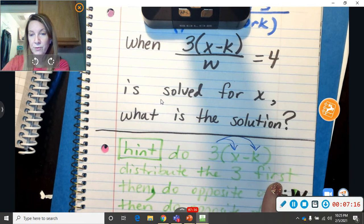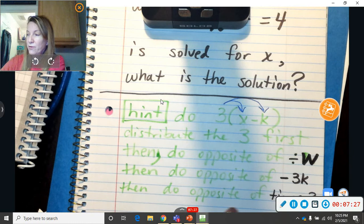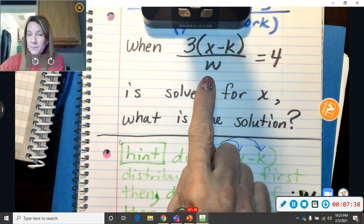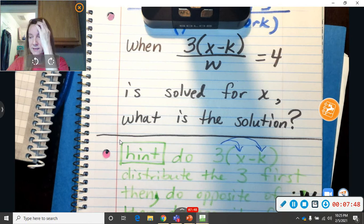So here's some hints. I said do the distributed property. Distribute the 3 first. And then another hint. I said then do the opposite of divide w. Then do the opposite of subtract 3k. Then do the opposite of times 3. So I'll walk you through it. But you still have to work it out. So there's your problem. Make sure you write that down carefully. And then look back at the hints. You still have to write it all out. And when you get done, please circle your final answer.